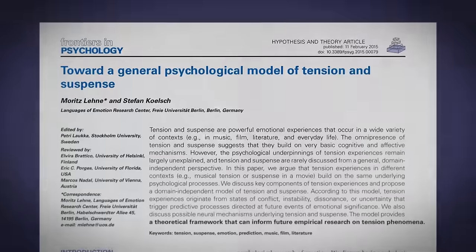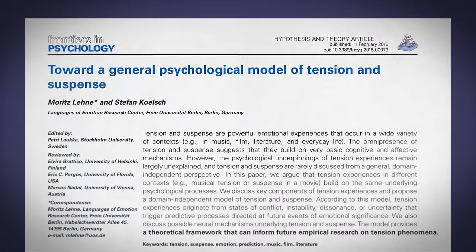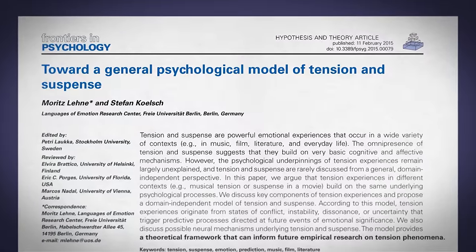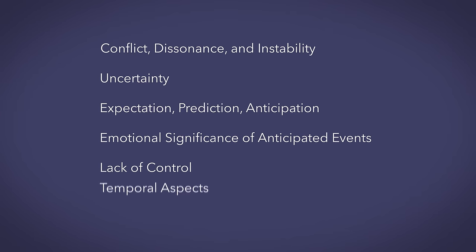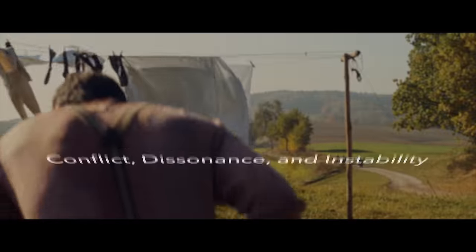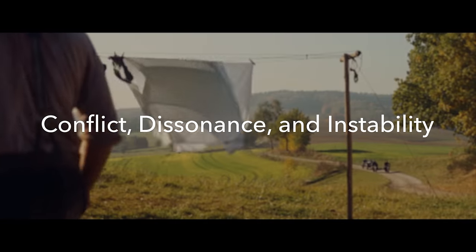In a paper titled "Toward a General Psychological Model of Tension and Suspense" by Moritz Lenn and Stefan Kolsch, they discuss six key components of tension experiences. Today I want to examine four of them, beginning with conflict, dissonance, and instability.